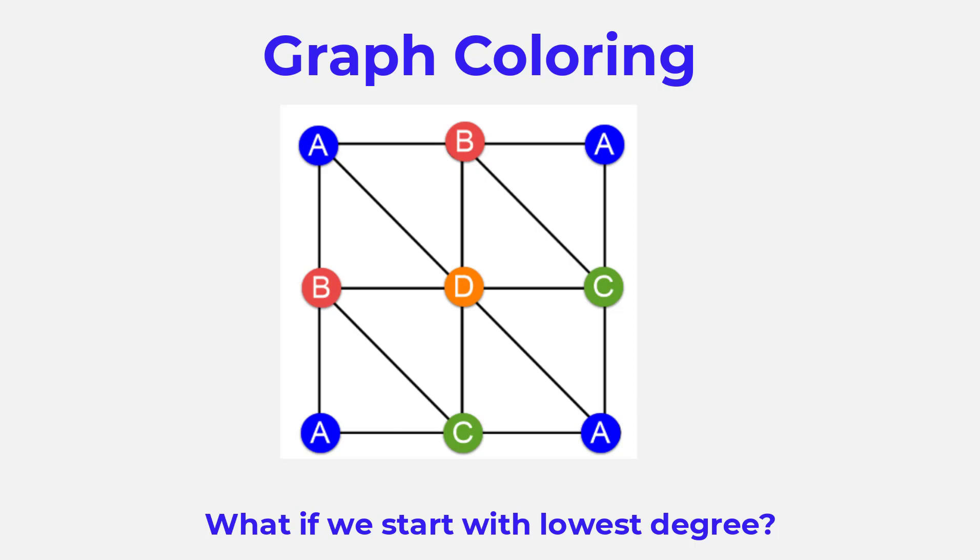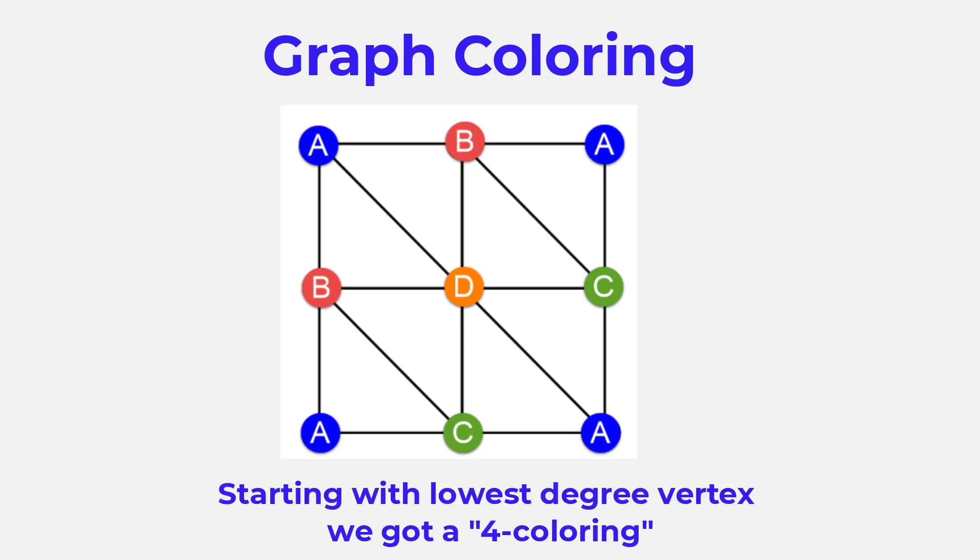So this is a legitimate coloring, one of many, for this graph. But does it have the fewest number of colors possible? It has four colors: blue, red, green, and orange. That's four colors.